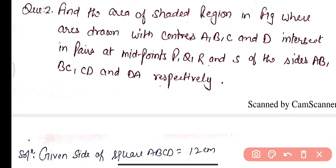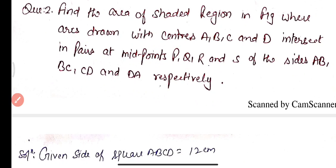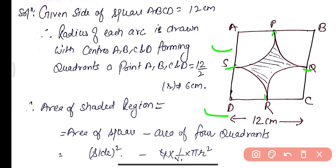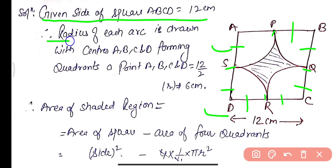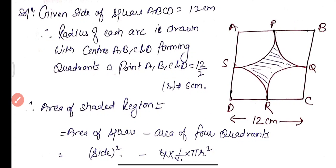Practice Question 2: Find the area of the shaded region where arcs drawn with centers A, B, C, D intersect in pairs at midpoints P, Q, R, S of sides AB, BC, CD, and DA respectively. Side of square ABCD = 12 cm. Radius of each arc = 12/2 = 6 cm, forming quadrants at each vertex.